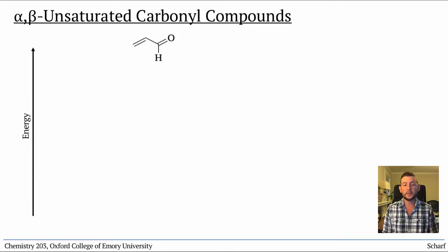Let's draw out the pi molecular orbital diagram of acrolein, the simplest alpha-beta unsaturated carbonyl compound. It has four atoms in the conjugated system, so four pi molecular orbitals, with zero, one, two, and three nodes.